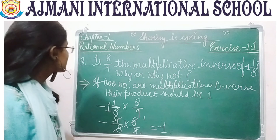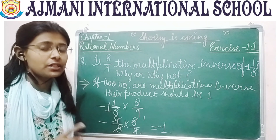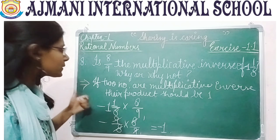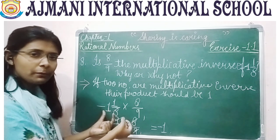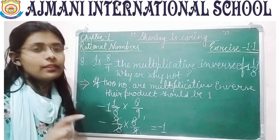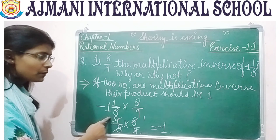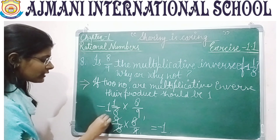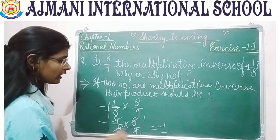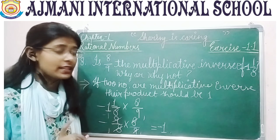Question number 8: is 8 by 9 the multiplicative inverse of minus 1 whole 1 by 8? First convert the mixed number to an improper fraction. The principle is: if two numbers are multiplicative inverses, their product should be 1. So multiply: minus 1 whole 1 by 8 equals minus 9 by 8, multiplied by 8 by 9. After cancelling, you get minus 1. Since the product is minus 1 and not 1, the answer is no — 8 by 9 is not the multiplicative inverse of minus 1 whole 1 by 8.